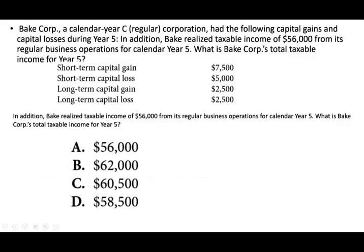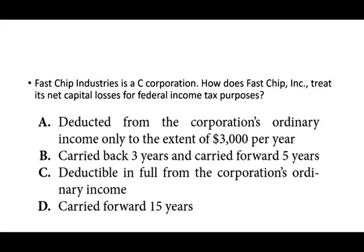Fast Chip Industries is a C-Corp. How does Fast Chip Inc. treat a net capital loss for federal income tax purposes? On the exam, they cover extensively how a corporation treats capital losses — it is something you have to know and memorize. If we have capital losses, we can offset them against capital gains. For any excess capital losses, we can carry them back three years and carry them forward five years.